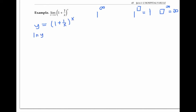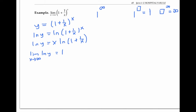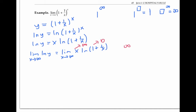If we set y equal to one plus one over x to the x, then taking the natural log of both sides, I can use log rules to rewrite that by bringing x to the front as a multiplier. Now if I take the limit as x goes to infinity of ln y, that would be the limit of the product x times ln(one plus one over x). As x goes to infinity, the first factor x goes to infinity; one plus one over x goes to one, and ln one goes to zero. So we have an infinity times zero indeterminate form, which we can rewrite as the limit of ln(one plus one over x) divided by one over x — a zero over zero indeterminate form.